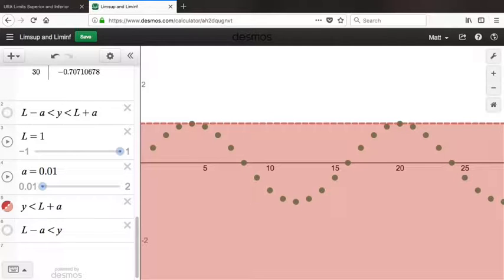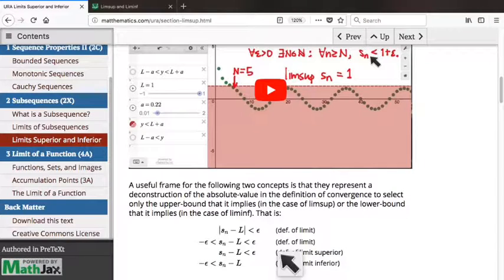What's great about that is that at any proof where you're trying to make a connection between a limit and a lim sup, using this form of the definition is super handy. Because in the definition of limit, we have this absolute value. That absolute value means that the quantity Sn minus L has to be bounded between plus epsilon and minus epsilon. We get limit superior and we get limit inferior by choosing only one of those two inequalities. Limit superior for Sn minus L less than epsilon, the top side, the upper bound, and limit inferior for the lower bound on the lower side, minus epsilon is less than Sn minus L. Using this form of the definition makes it easier to make those connections.